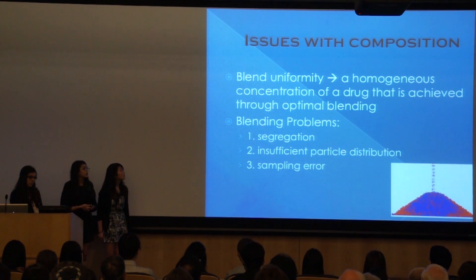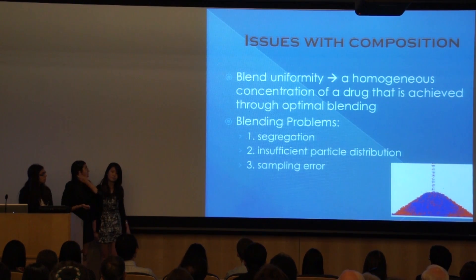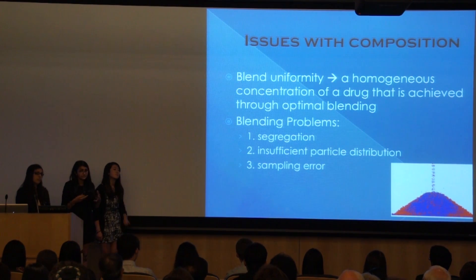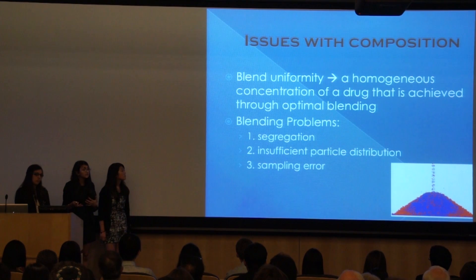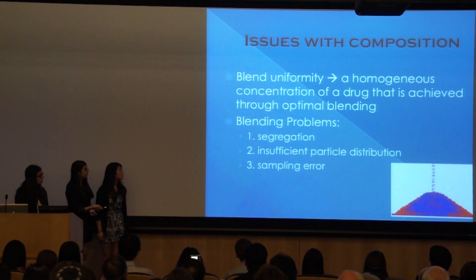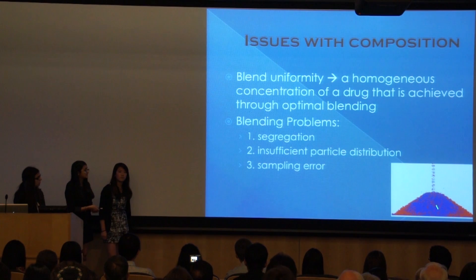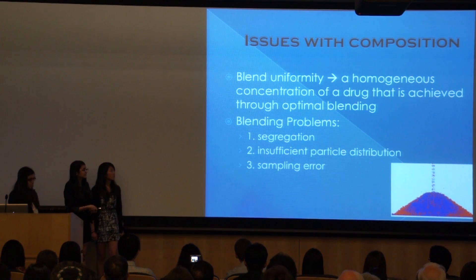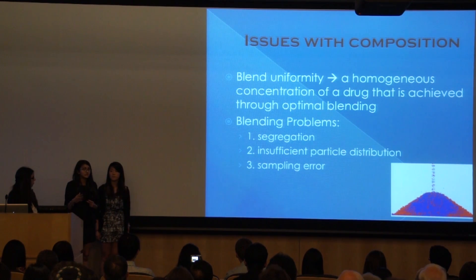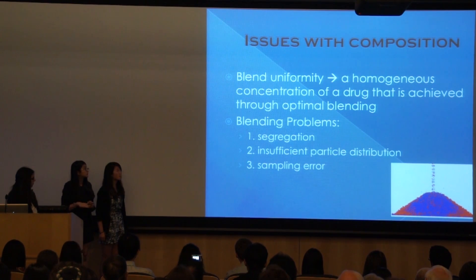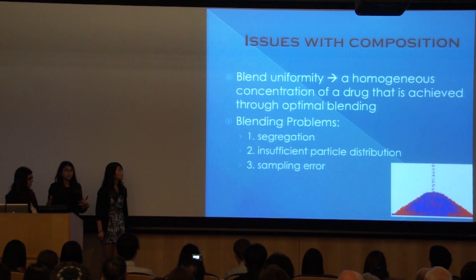Three main problems that can occur when blending are segregation, insufficient particle distribution, and sampling error. Segregation is when particles separate based on size and density, leading to an uneven patch. Insufficient particle distribution is demonstrated in this diagram, where finer particles are at the top and center, and heavier particles fall down to the sides, making the blend inconsistent. And finally, sampling error is when you don't take samples from multiple parts of the blend, but rather choose one specific part.